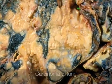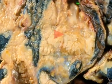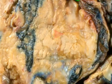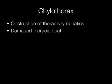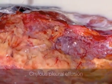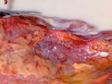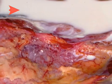This is a photograph of carcinoma of the lung, which is a common cause of pleural effusion. The milky white fluid filling the pleural cavity in this case is a chylous pleural effusion, caused by obstruction of the thoracic lymphatics or damage to the thoracic duct.